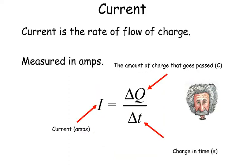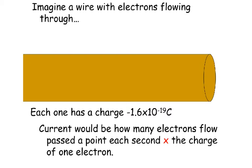Current is the rate of flow of charge and it's measured in amps. The equation is: current I is equal to the amount of charge that goes past a point in a circuit in coulombs divided by the time taken. Imagine a wire with electrons flowing through it — each one has a charge of 1.6 times 10 to the minus 19, and the current would be how many electrons flow past a point each second times the charge of 1 electron.